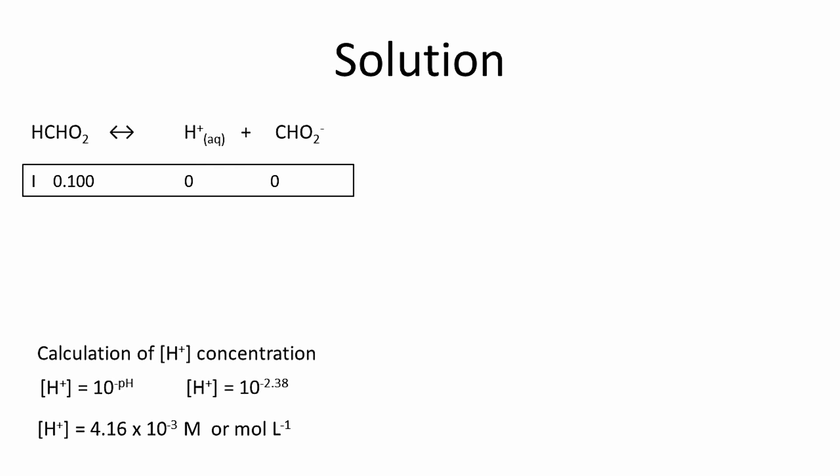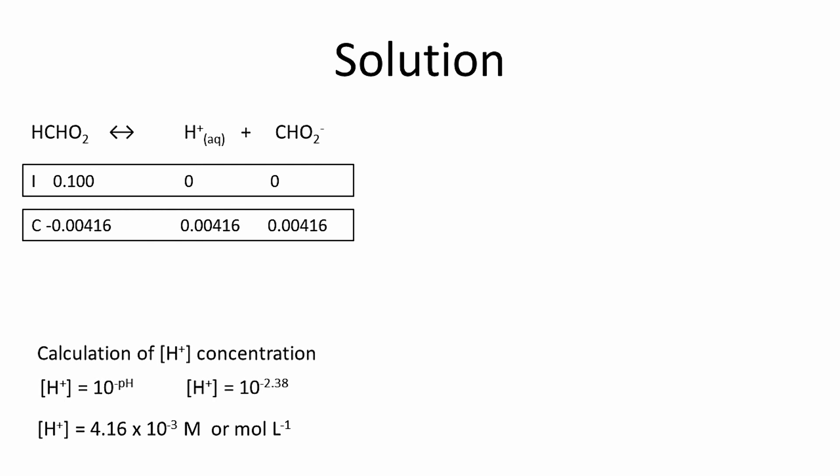The number of moles of formic acid that has undergone ionization is equal to 4.16 × 10⁻³. From 0.1 mole of formic acid, 0.00416 moles has dissociated. That is why a negative sign is shown beneath formic acid, indicating a decrease in concentration.